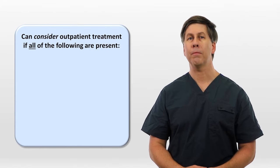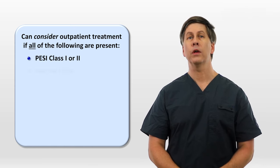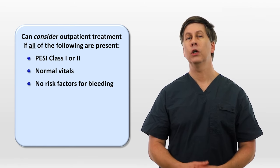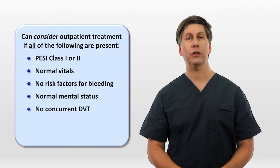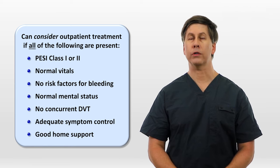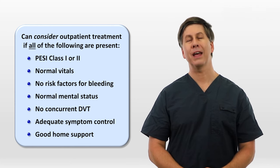One triage decision that frequently comes up is whether a patient with a small PE diagnosed in the emergency room can be safely discharged directly to home. One can consider outpatient treatment if all of the following are present: a PE Severity Index class of 1 to 2, normal vitals, no major risk factors for bleeding, normal mental status, no concurrent DVT, adequate symptom control, and good home support. Overall, most patients will not meet all of these criteria and thus should be admitted.